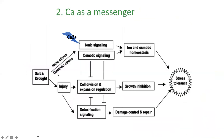Looking at the second role — calcium as a messenger — basically what happens is when the roots are experiencing salt or drought stress. It can actually be any sort of stress; anything affecting the hydric potential of the plant, whether it's salt, drought, disease, eelworm, compaction — anything affecting the roots.